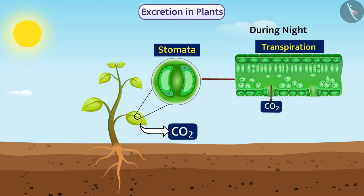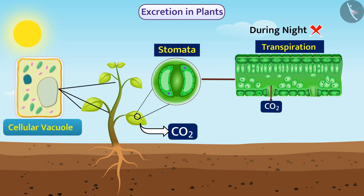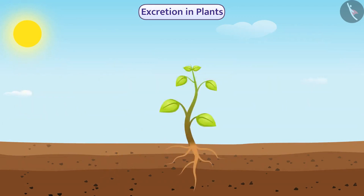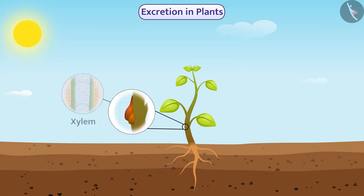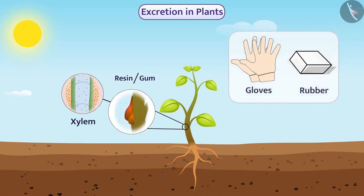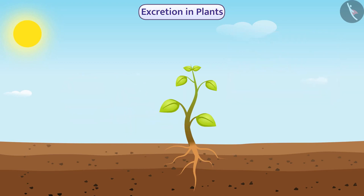In the process of transpiration, excess water is also removed by the stomata. During night, transpiration does not occur. Some waste products are stored in the cellular vacuoles of the bark of leaves and twigs, which get detached from the plant. Some waste products are stored in old xylem in the form of resin and gum, which are very useful to humans. The roots of the plant remove some waste products into the surrounding soil through diffusion.